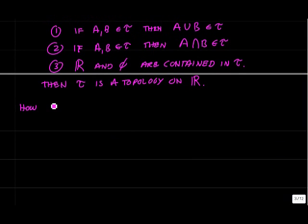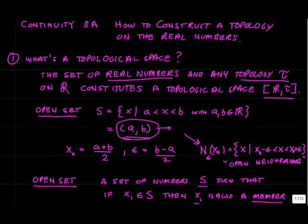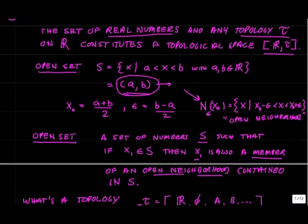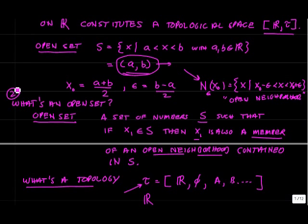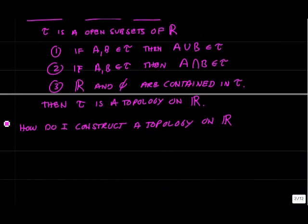So we have our questions numbered: question one, what's a topological space? Question two, what's an open set? Question three, what's a topology? And question four, how do I construct a topology on R?